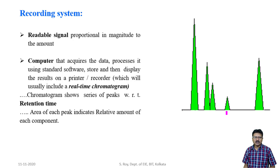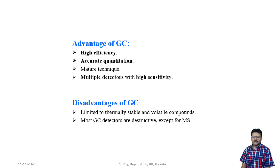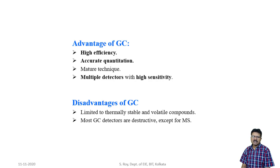The advantages of gas chromatography: due to its high efficiency it allows separation of components of complex mixtures in a reasonable time; accurate quantitation with sharp, reproducible peaks; a mature technique with many application notes available; and multiple detectors with high sensitivity, which can also be used in series with a mass spectrometer since mass spectrometry is a non-destructive technique. The disadvantage: gas chromatography is limited to thermally stable and volatile compounds only, and most GC detectors are destructive except the mass spectrometer.